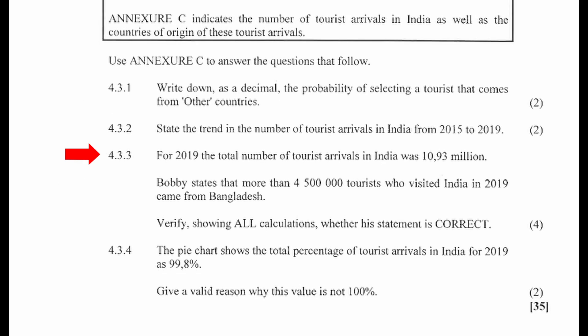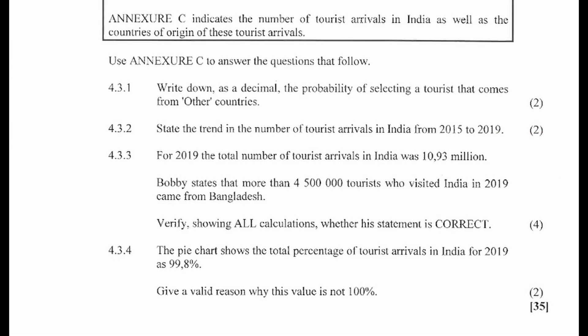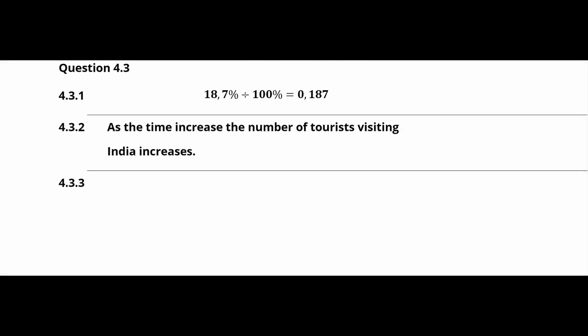4.3.3: For 2019, the total number of tourist arrivals in India was 10.93 million. Bobby states that more than four million five hundred thousand tourists who visited India in 2019 came from Bangladesh. Verify, showing all calculations, whether his statement is correct. From the pie chart in Annexure C, the percentage of tourists that came from Bangladesh was 37.1%. The total number of Bangladesh tourists equals 37.1 divided by 100, multiplied by 10,930,000 tourists.